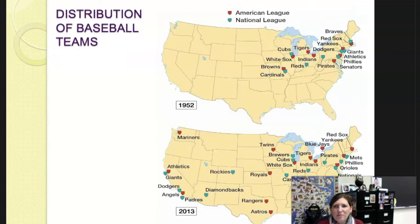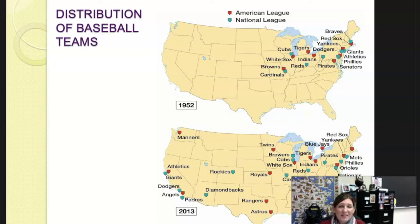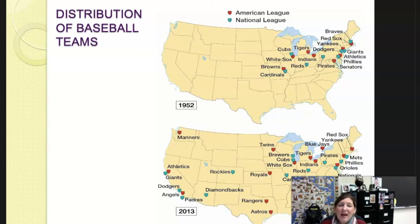Let's look at the distribution of baseball teams. The changing distributions of North American baseball teams illustrate the difference between density and concentration. In 1952, most teams were heavily concentrated in the Northeast to the Midwest, all in the north. By 2013, we see more dispersal of baseball teams, partly due to growing popularity of the national baseball league and growing cities in other parts of the country demanding their own home teams.